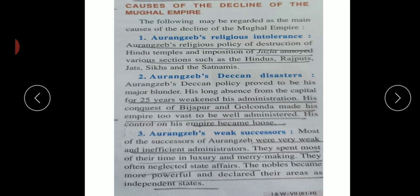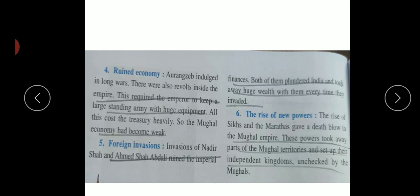Third reason: the nobles became more powerful than the king. The king was not capable of administration, but his nobles were. Eventually, when the king like Jahangir was not capable of dealing with the situation, the nobles declared independence and occupied their own places, making independent states. Fourth reason: a ruined economy - after long wars, everything was ruined.